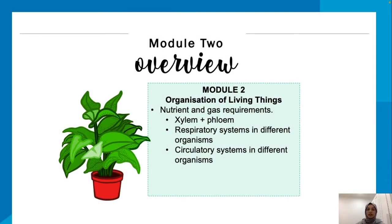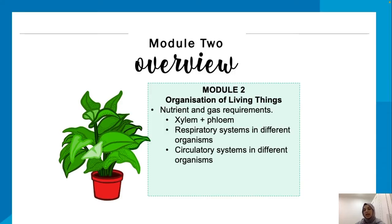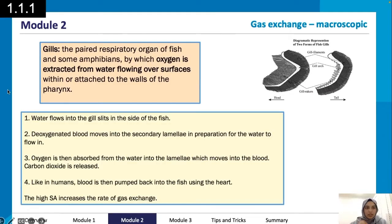We're going to look at nutrient and gas requirements, including the xylem and phloem, respiratory systems in different organisms, and circulatory systems in different organisms as well.